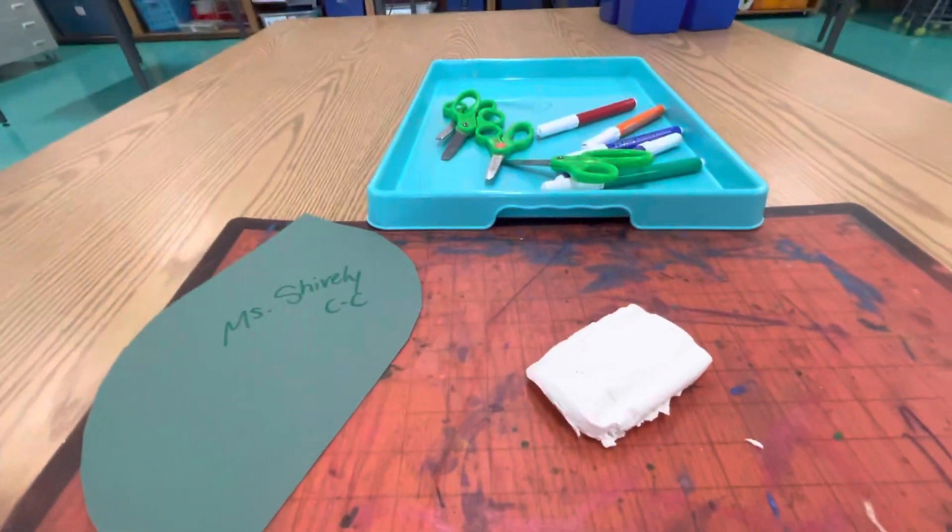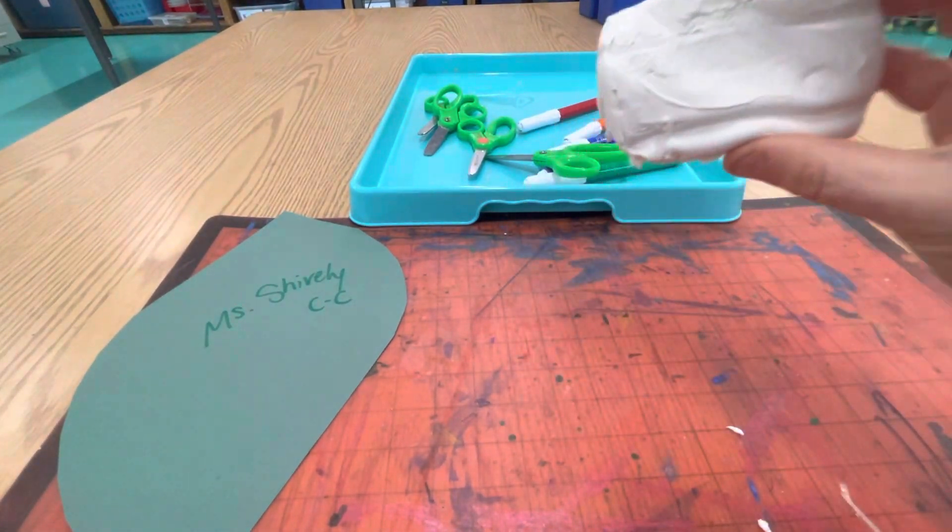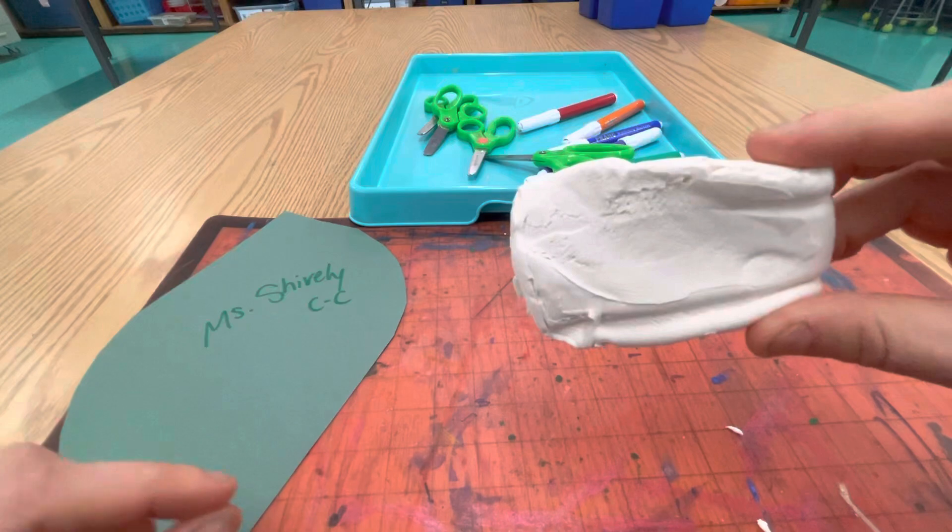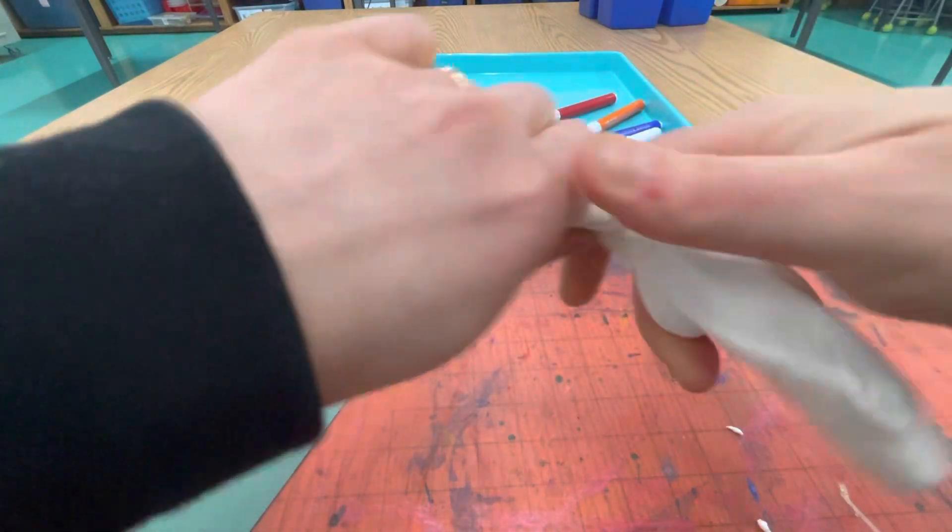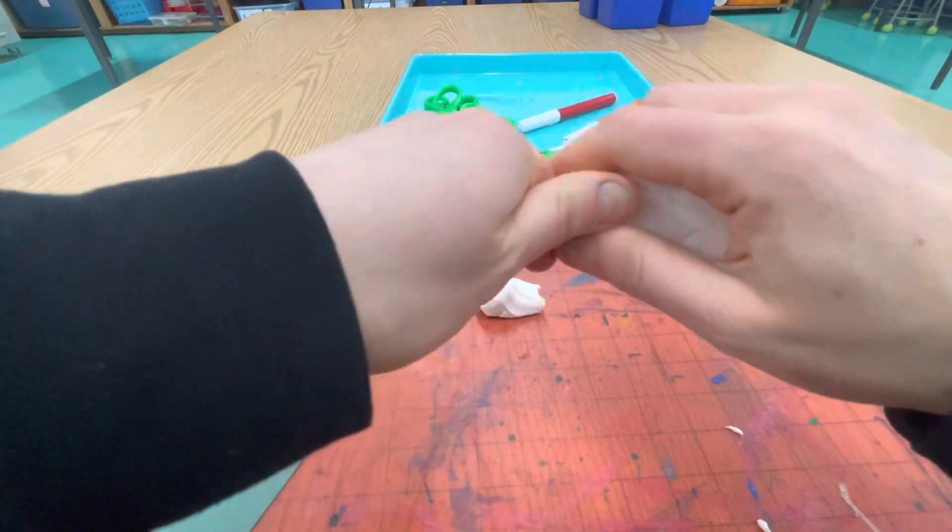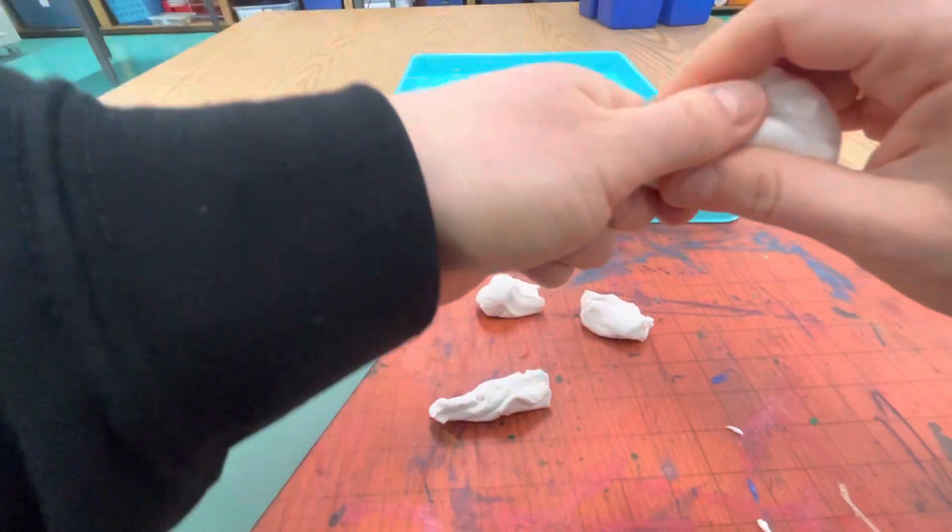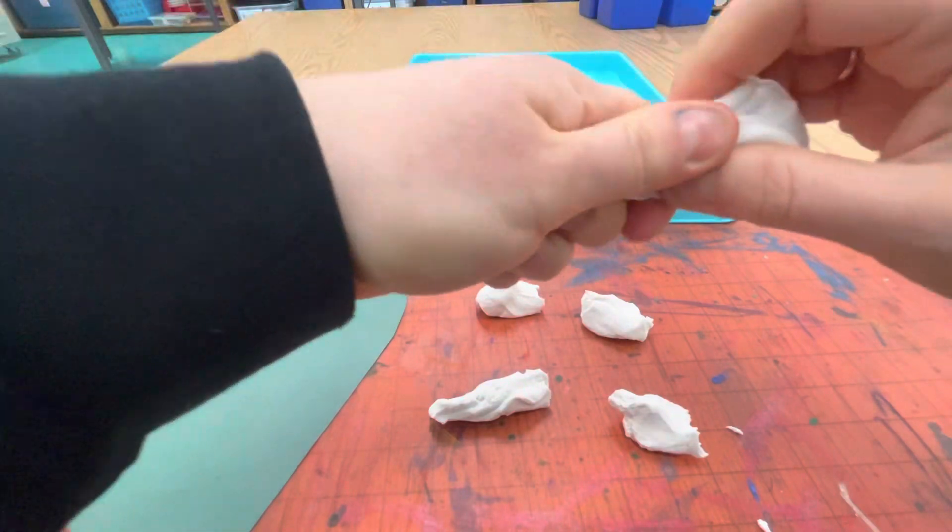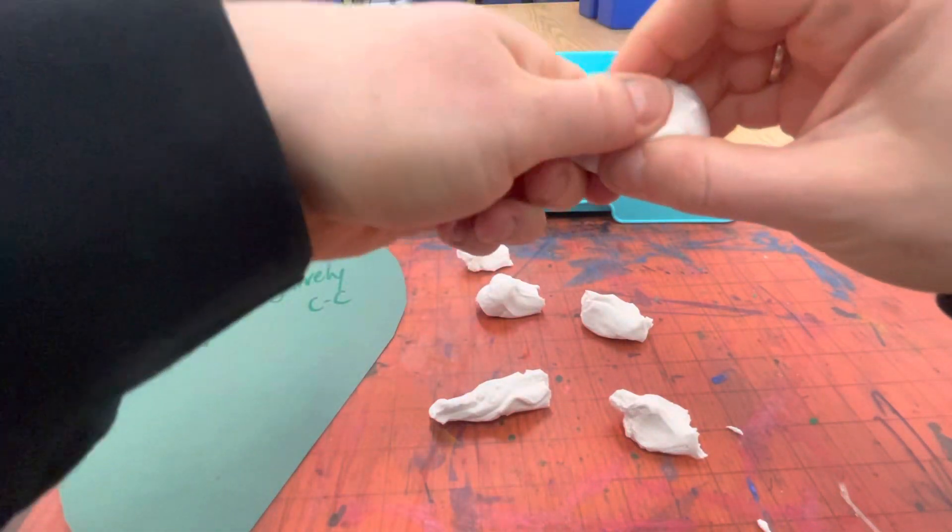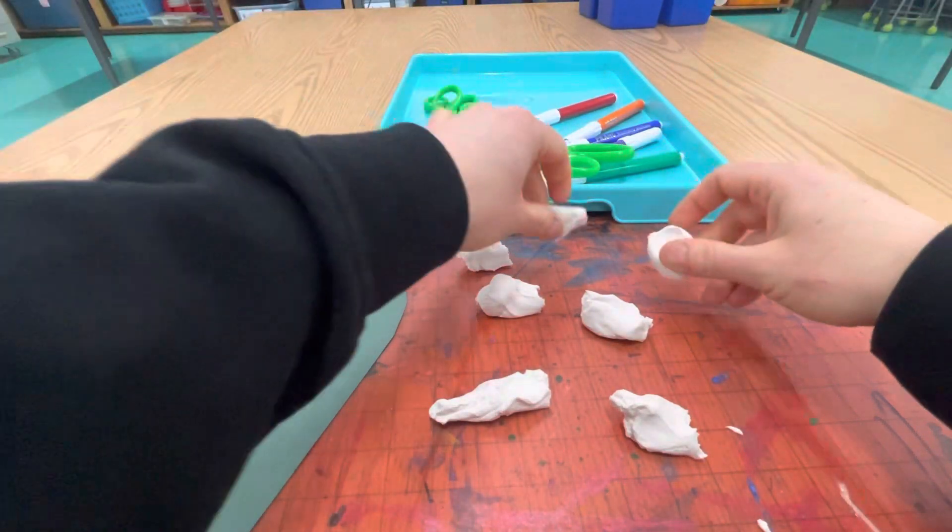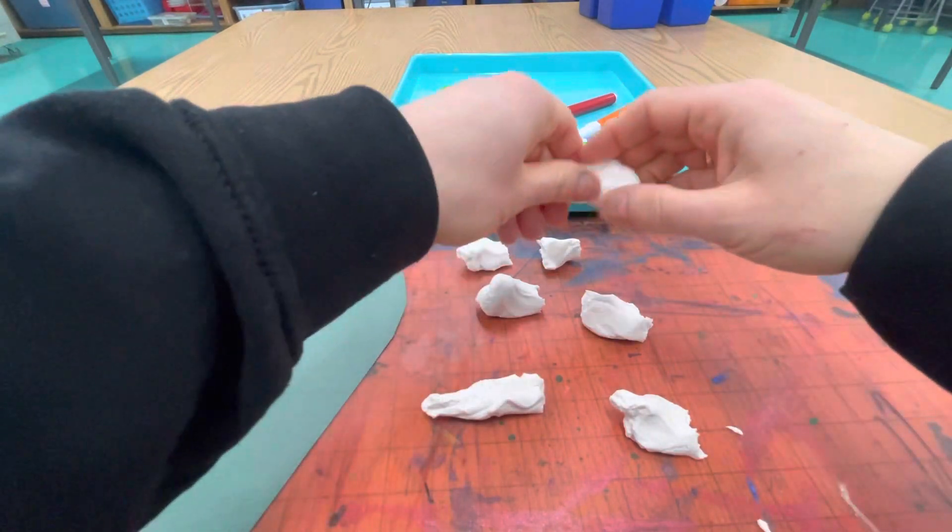To make your caterpillar, you're going to break your Model Magic up into seven pieces. Try to make them equal. It's okay if some are bigger than others, but just try to make them equal. Three, four, five, six, seven. If some pieces are bigger than others, you can just break a little bit off and even them out a little bit like that.